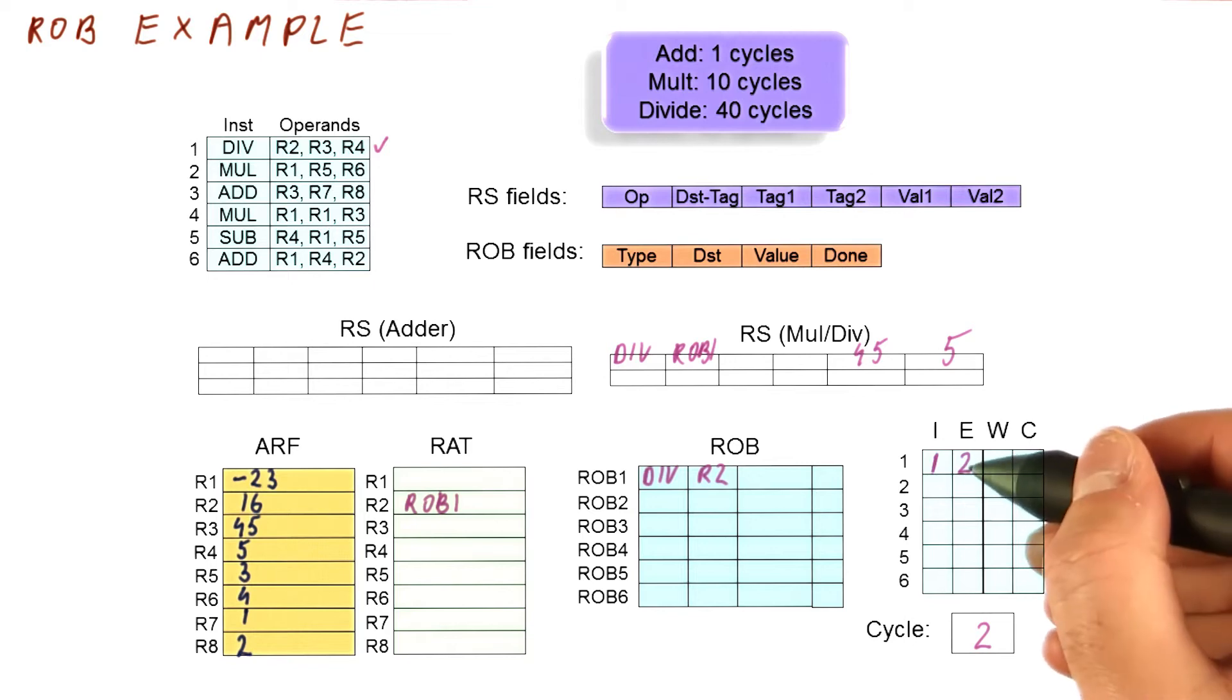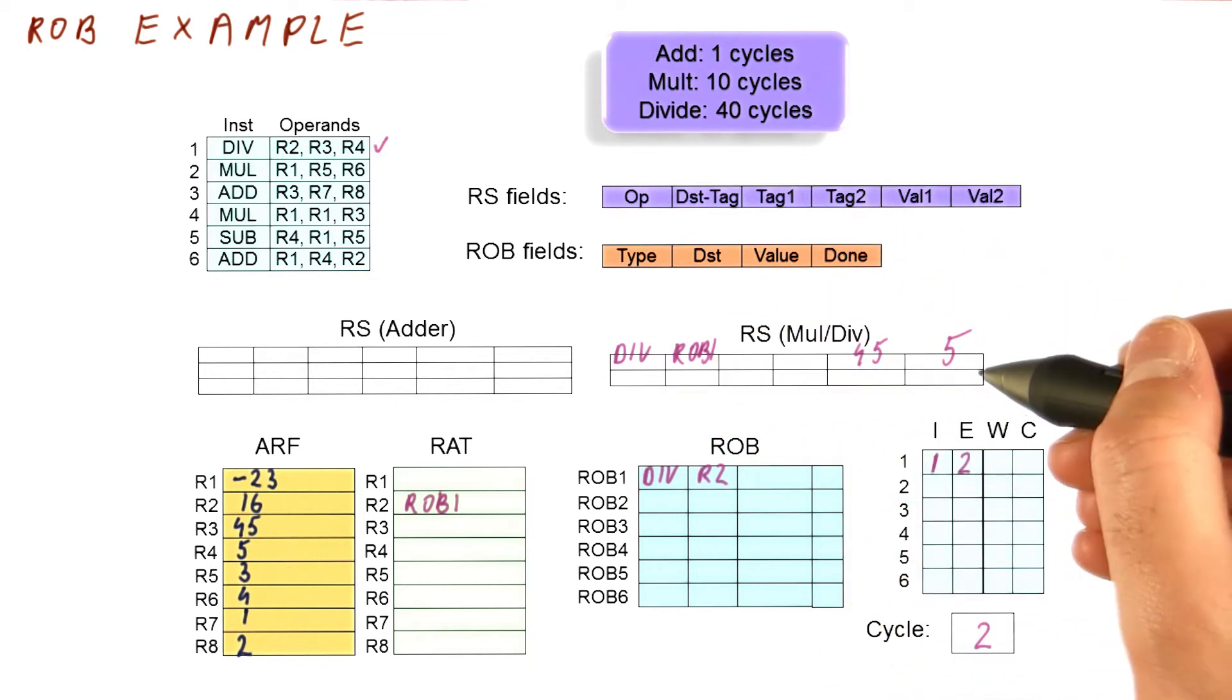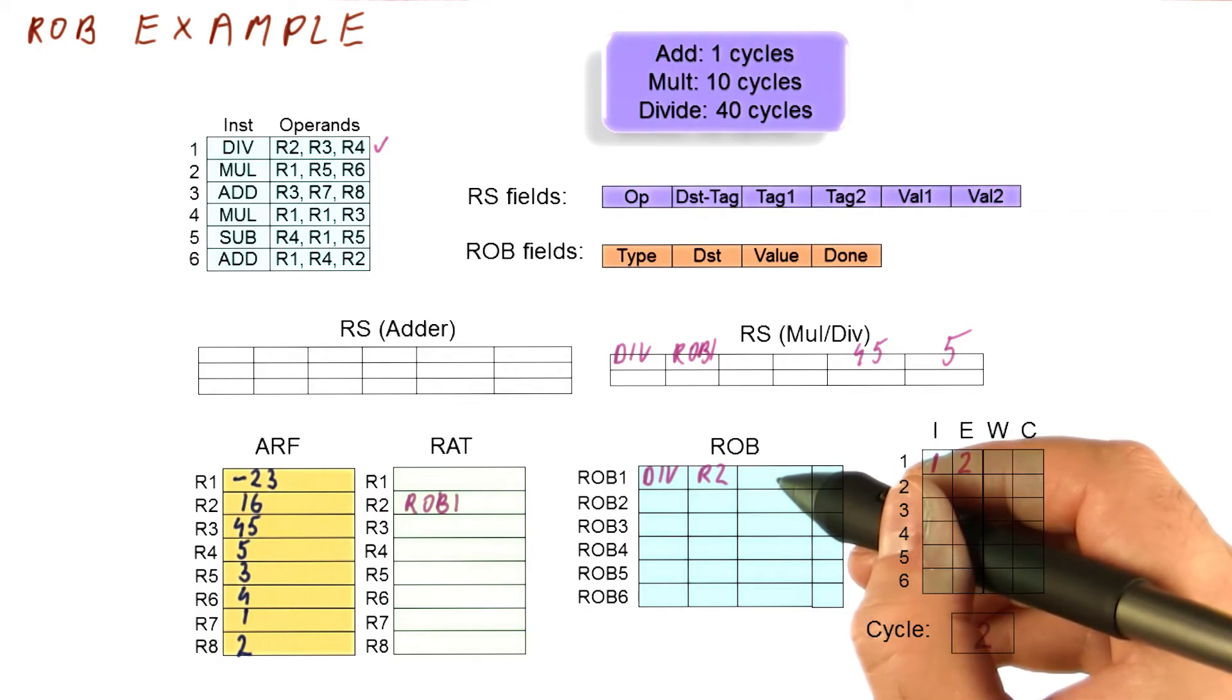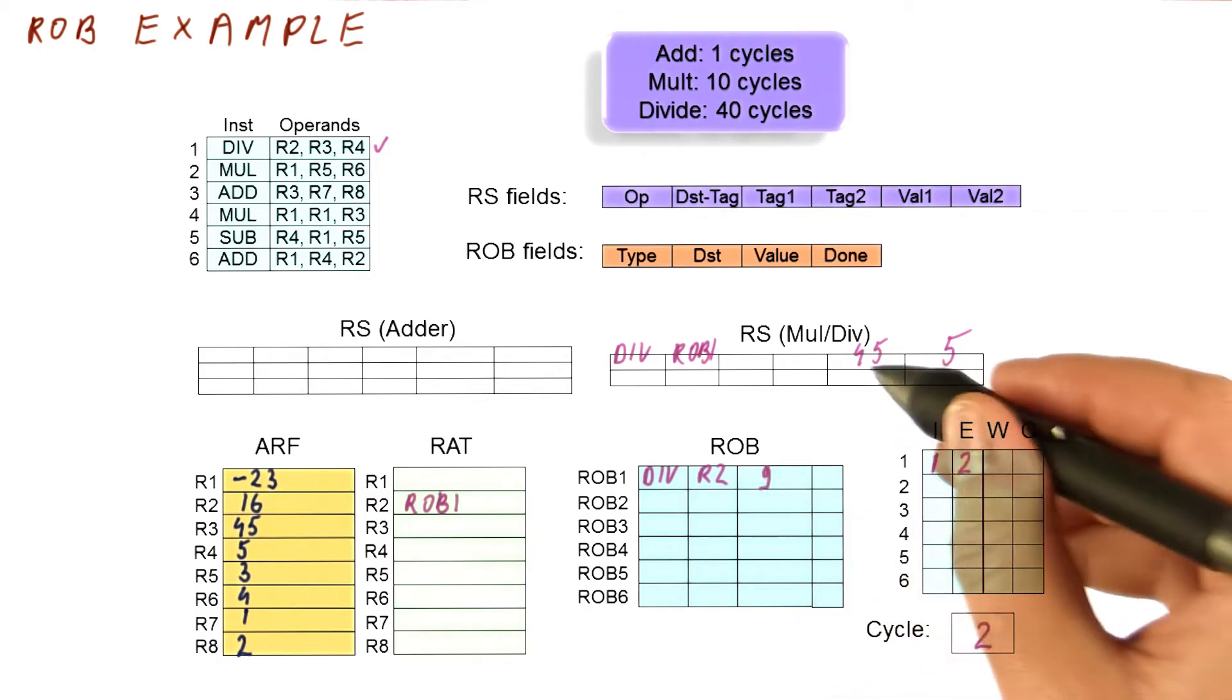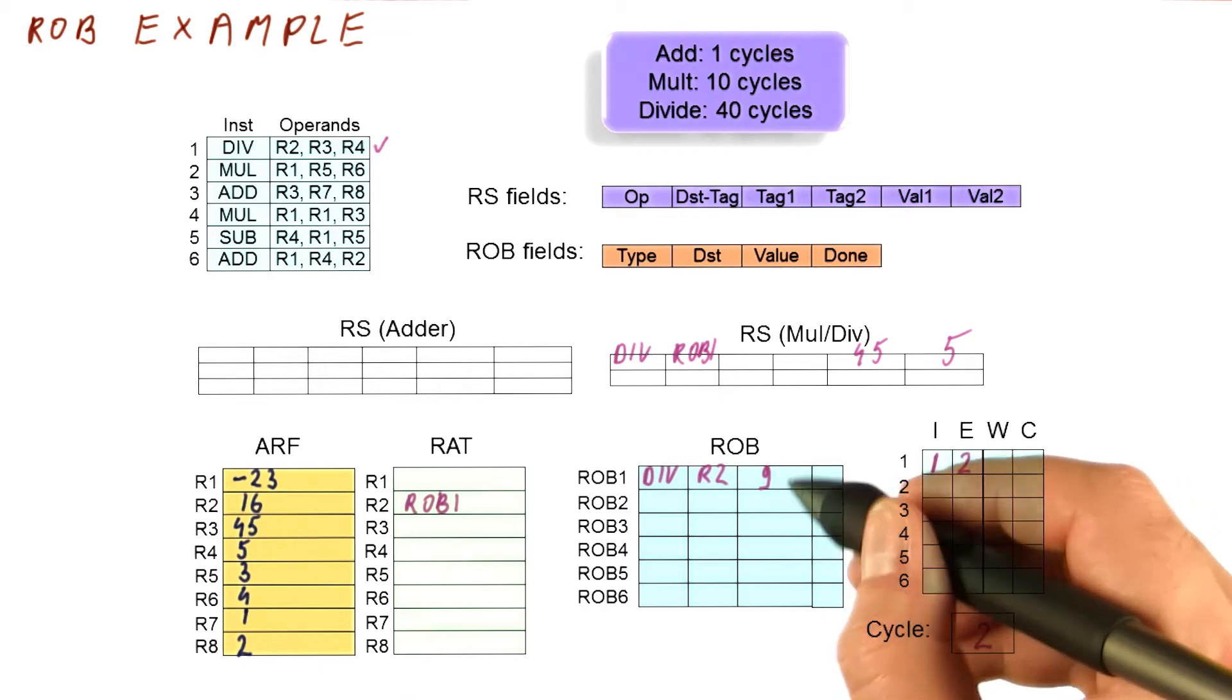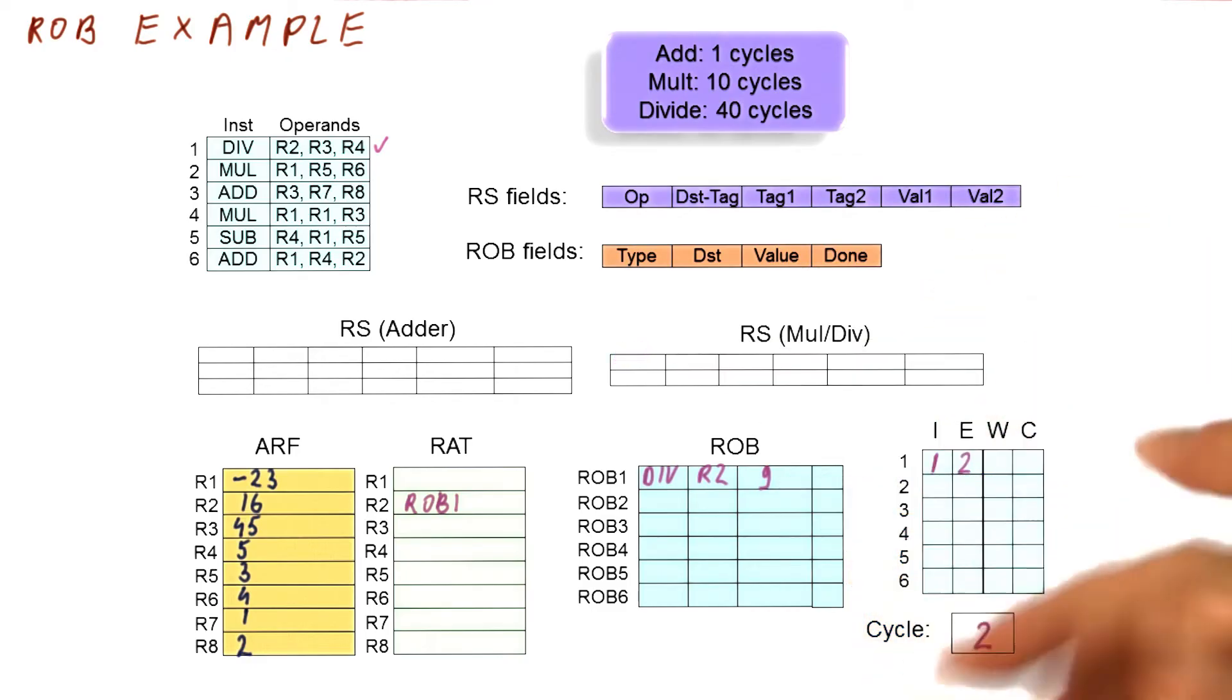Now, in cycle two, this instruction begins executing. So the reservation station becomes free. Before I free the reservation station, I'm going to note that this instruction is dividing 45 and 5, so the result that is going to eventually end up in the ROB is going to be 9, 45 over 5. This instruction is not done, so technically this value lands here only when it's done, but I'm going to note this is what's going to happen because I want to know what that value will be. And with that, this reservation station becomes free.